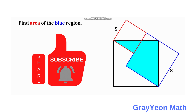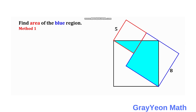For the first method, we are going to label this distance as b. So this would be b, and if that is b, then since this side of the blue square is 8, this side will be 8 minus b. Next, we get the difference of the distance of these two squares — the red and blue squares — so if one is 8 then this dimension should be 3.